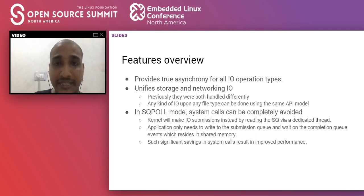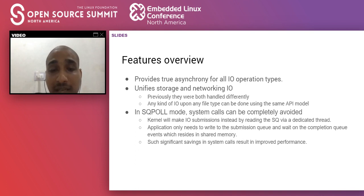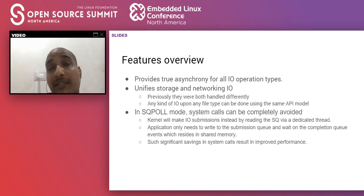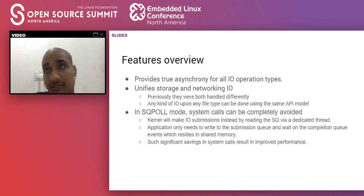IOUring provides true asynchrony for all operation types — storage and networking. The SQ poll mode is very interesting because we do not have to make any system call when using this flag. We can completely bypass the system call interface and issue all IO operations without any context switches, which can really transform the way we interact with the kernel for IO.